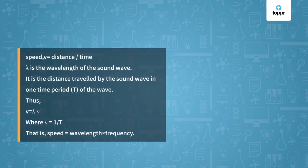Speed of sound is defined as the distance a point on a wave travels per unit time. We know speed v is equal to distance upon time. Here lambda is the wavelength — the distance travelled by the sound wave in one time period. So v equals lambda times nu, where nu equals 1 upon T. That is, the speed of a sound wave equals wavelength multiplied by frequency.